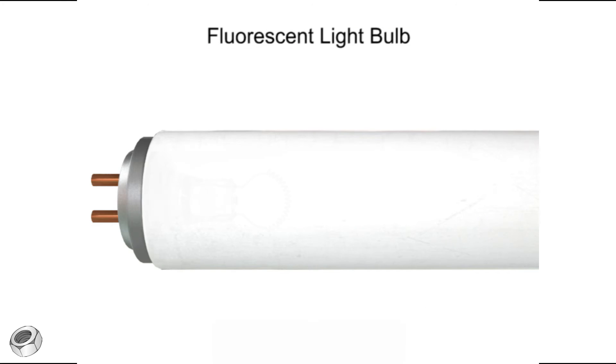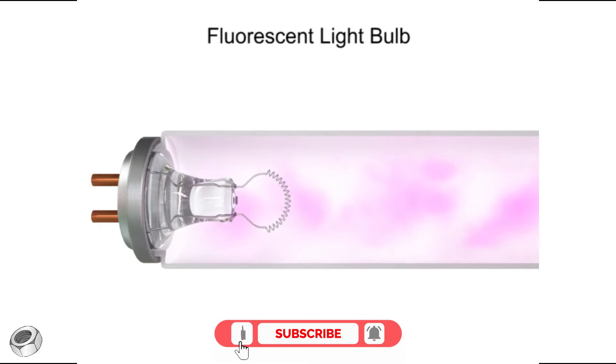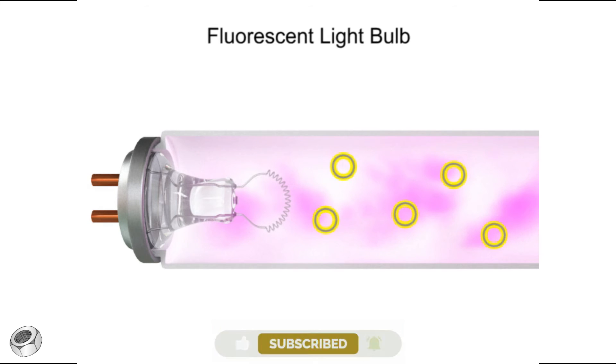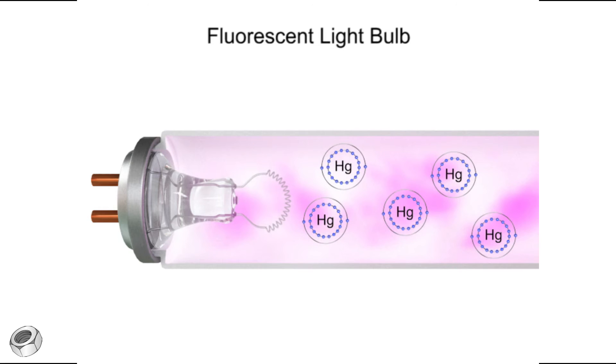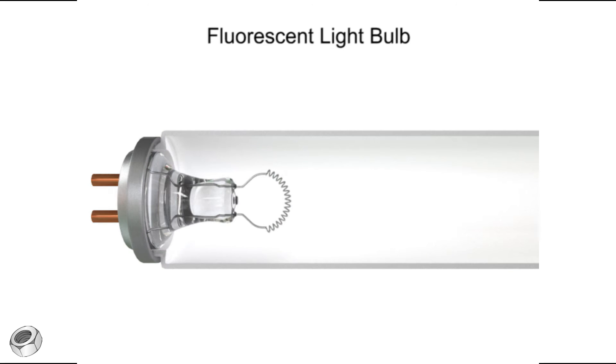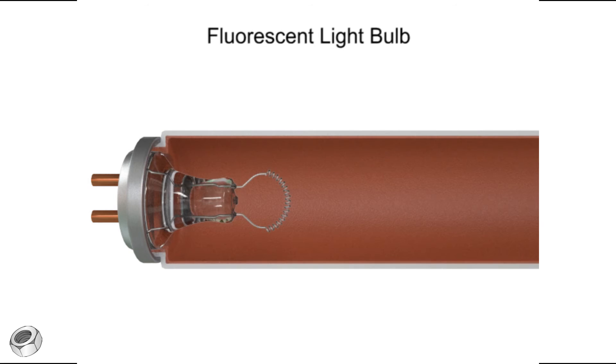A typical fluorescent bulb is filled with argon gas and a minuscule amount of vaporized mercury. The inner surface of the tube is coated with the powdery phosphor substance.